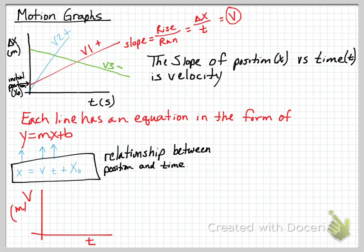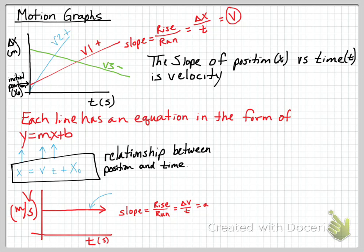Now let's do another graph — a velocity versus time graph with velocity in meters per second and time in seconds. We're going to draw a flat, straight horizontal line. The slope of this line is rise over run: the rise side is velocity and the run side is time, giving us change in velocity over time, which equals acceleration. Acceleration is the slope of a velocity versus time graph. Since this flat line has no rise — just run — the rise is zero, so zero over any time equals zero: the acceleration is zero.